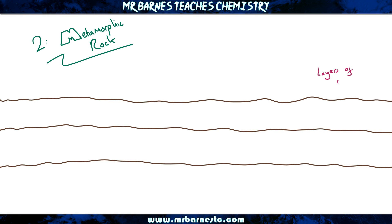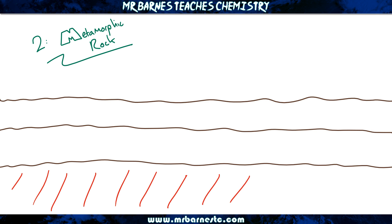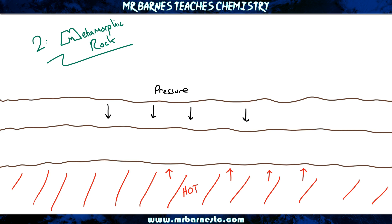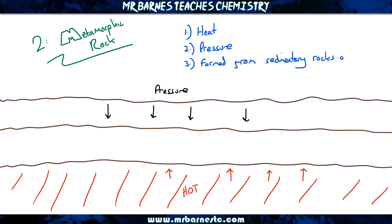If we move on to metamorphic rock, so we've now got our layers of rock. How did our sedimentary rock turn into metamorphic rock? Quite simply, you've got your layers below which became really hot from the earth, and you have your layers from above which were putting pressure down, compacting it again. So that heat and pressure turned it into a metamorphic rock, formed from sedimentary rock, over millions of years.